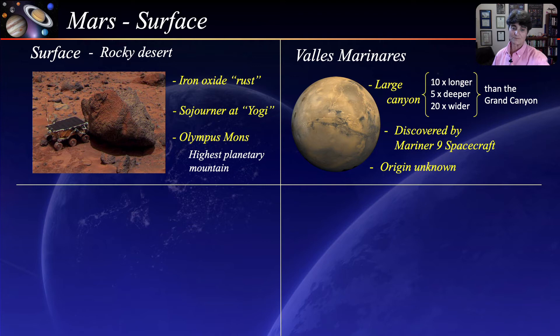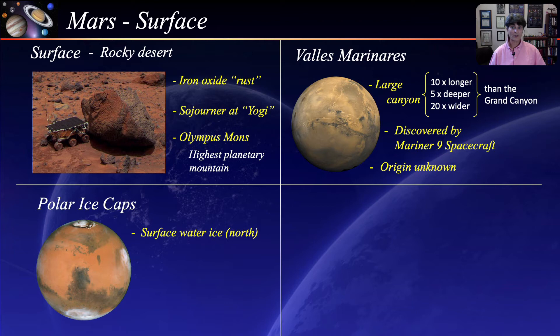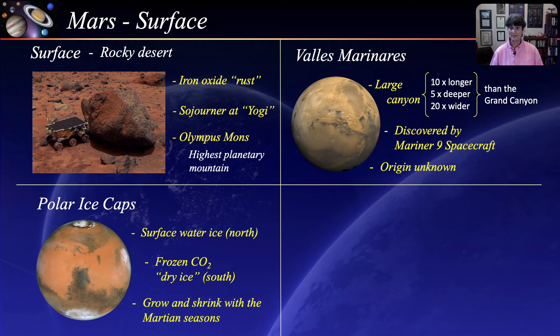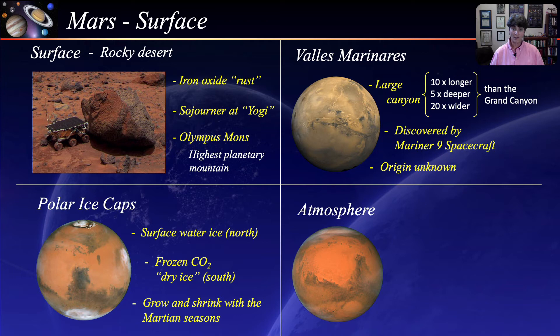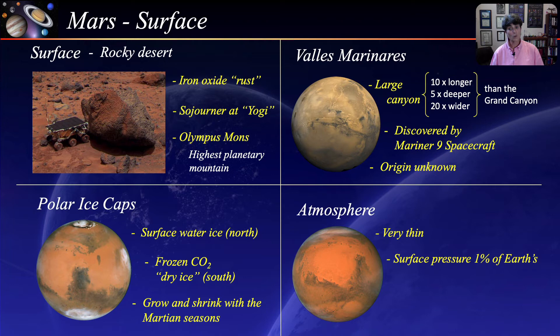Mars has polar ice caps. The North has a water ice cap and the South has a frozen carbon dioxide or dry ice cap, with a water ice cap beneath it as well. Just like Earth, the axial tilt causes seasons on the planet and the ice caps grow and shrink with the Martian seasons. It is believed that Mars once had an atmosphere able to sustain a warmer climate and surface water, but for reasons we don't know yet, Mars did not retain its atmosphere and dried out and cooled. Today, Mars has a very thin atmosphere — surface pressure is only one percent that of Earth — and the atmosphere is mainly carbon dioxide.